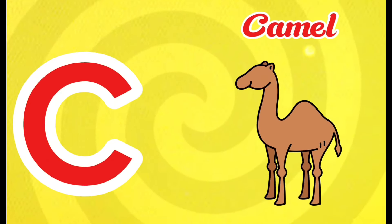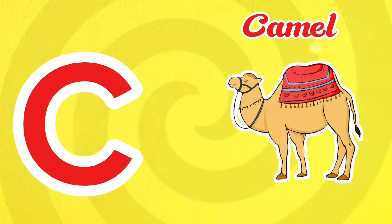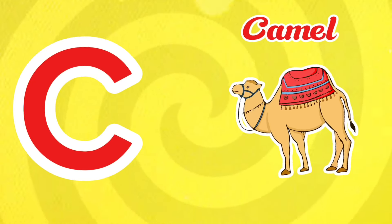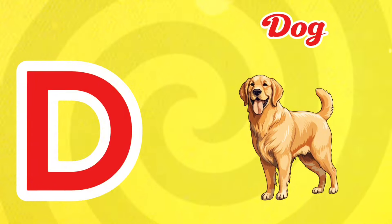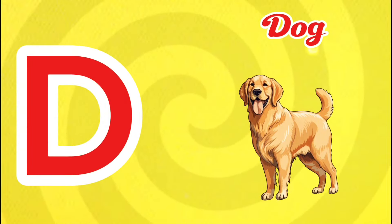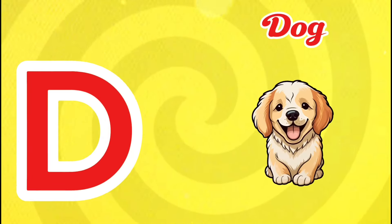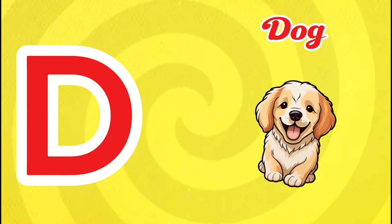C is for Camel. C-c-c-camel. C is for Camel. C-c-c-c. D is for Dog. D-d-dog. D is for Dog. D-d-d.